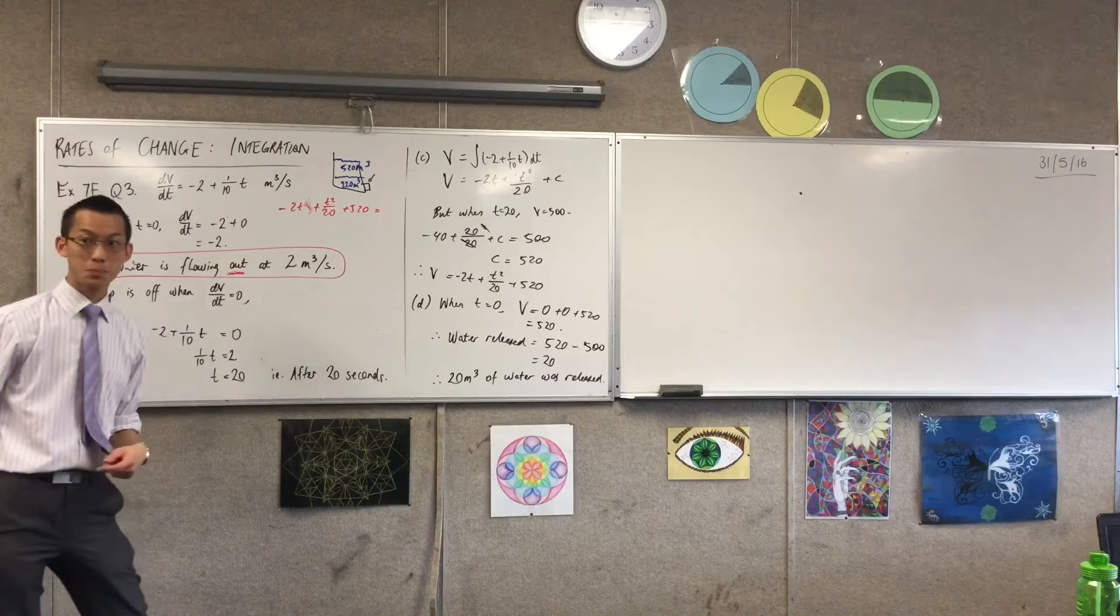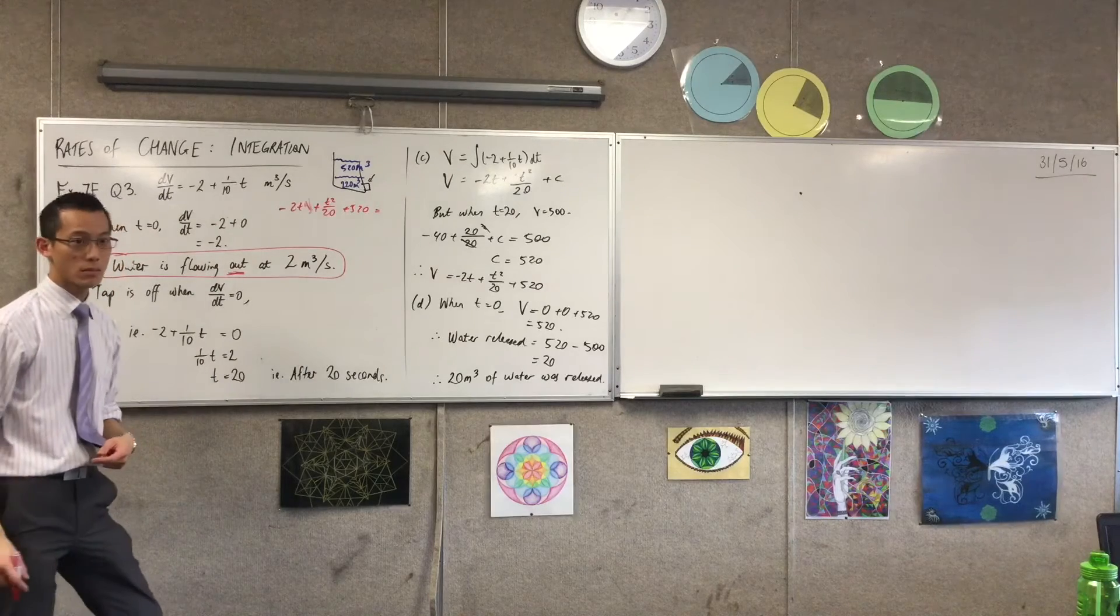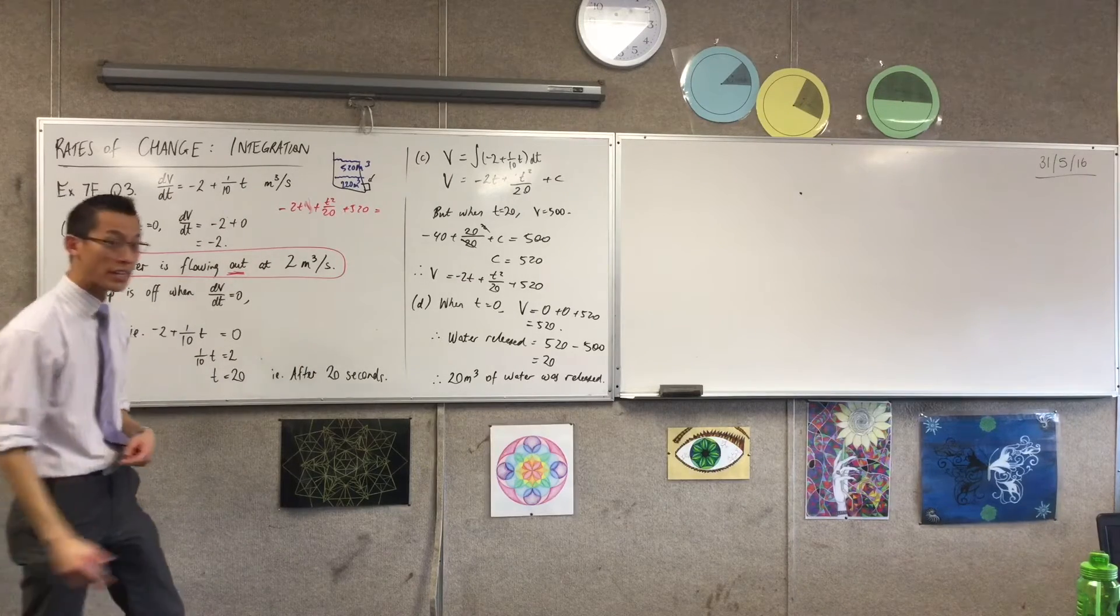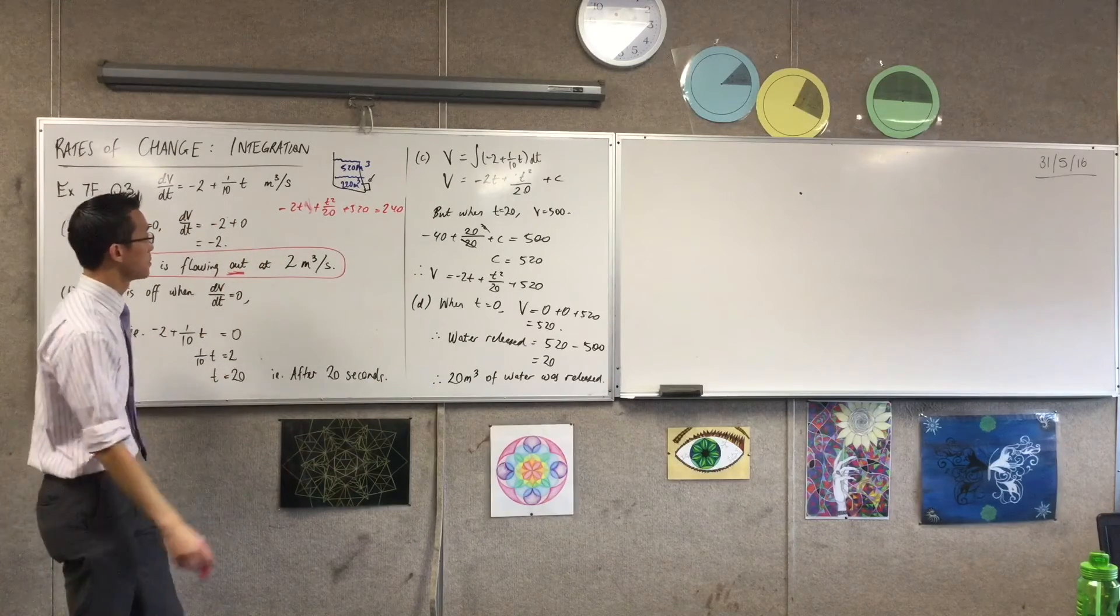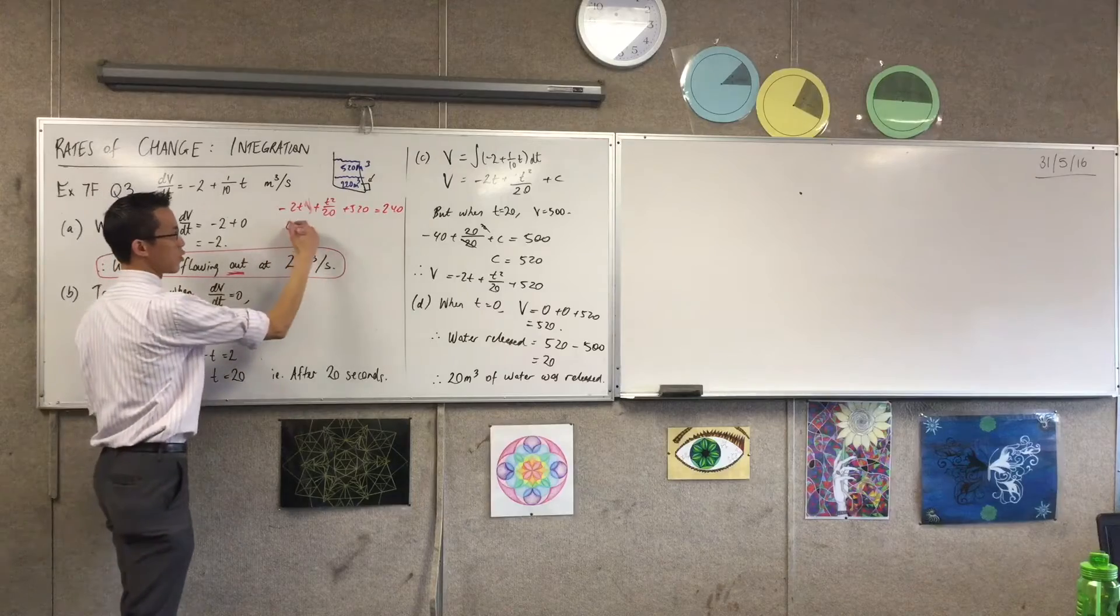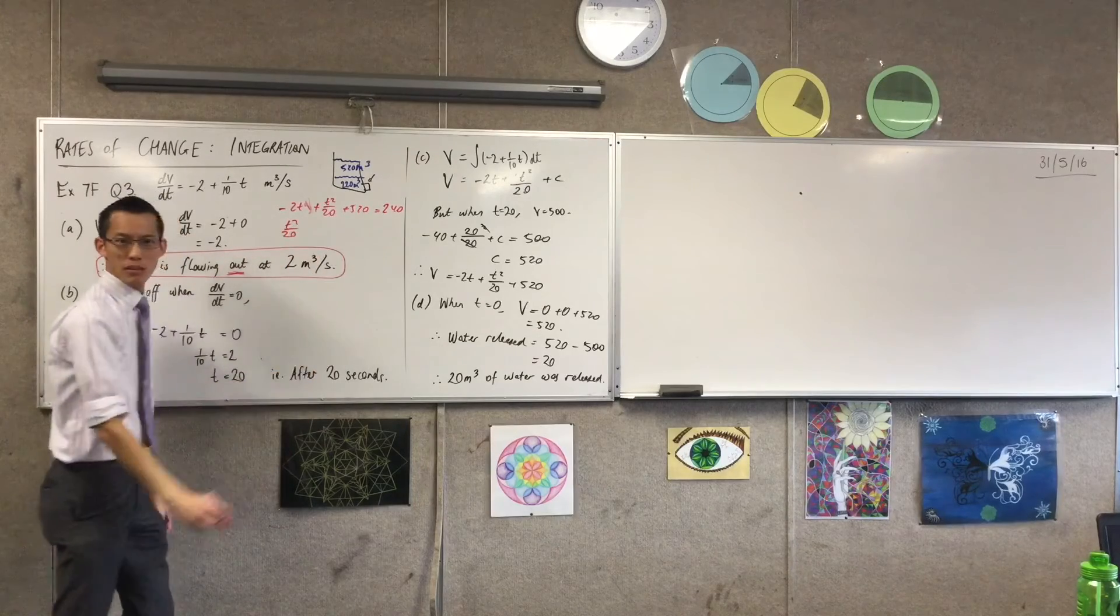I want it to get to 240. 240. Okay, so I'm just going to try and solve this and see what happens. First thing I notice is, this is a quadratic. Let's get the right term at the front.